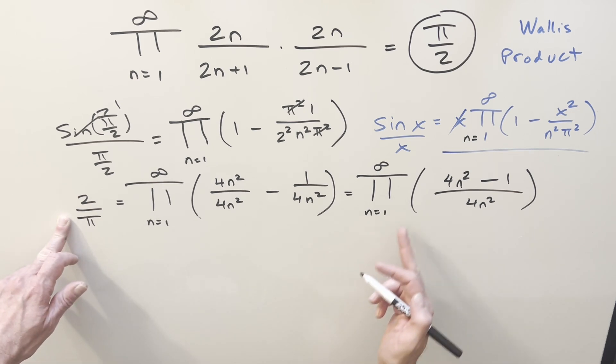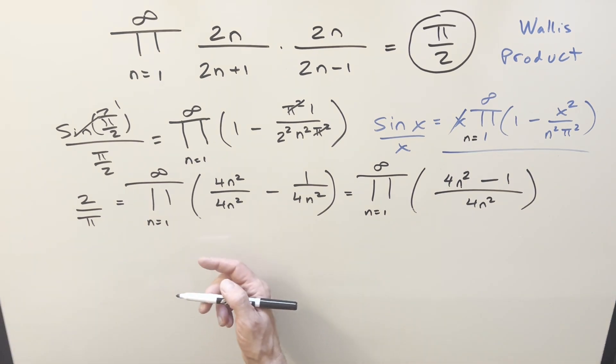And at this point, we're pretty close, but let's get it looking more like this. If I flip this, we have our pi over 2. So let's take the reciprocal of everything. So take the reciprocal here. We have pi over 2 equal to, here, you know, with the product, we can just flip it. With a sum you can't do that.